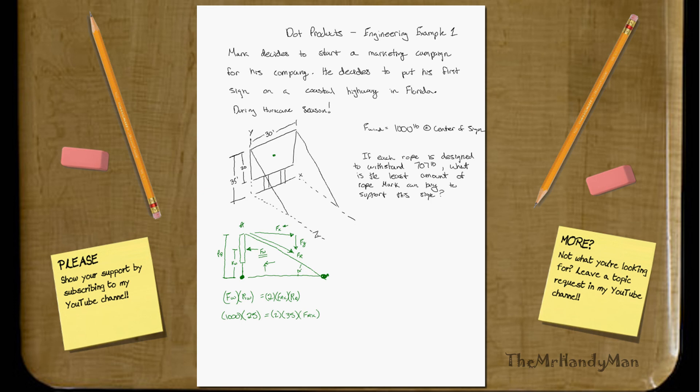So we have to solve for frx. Okay, so frx, when we solve for that, equals three hundred and fifty-seven point one four. And you're sitting there going, okay, so that's the force on, that's the force in the x direction. So, what does that mean?